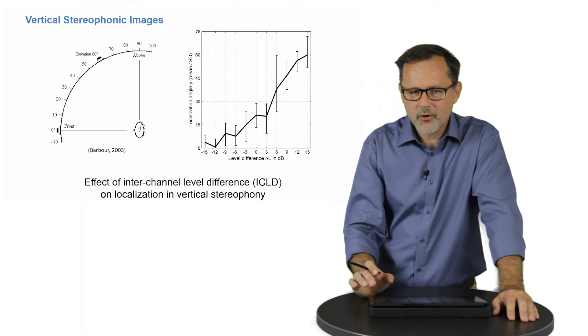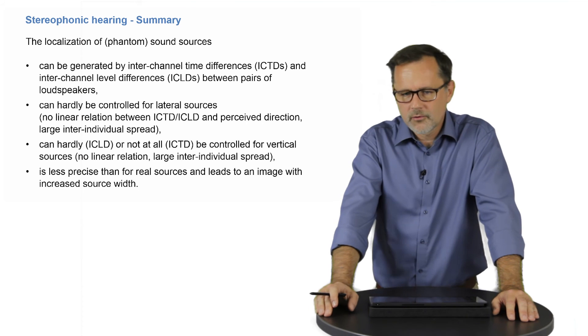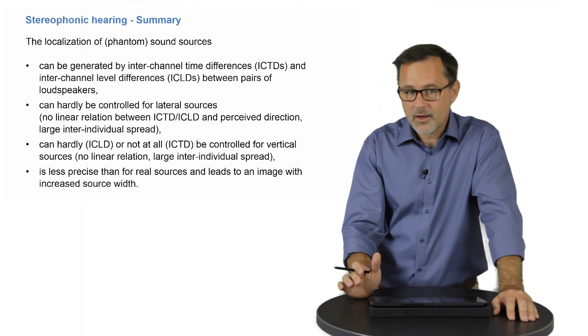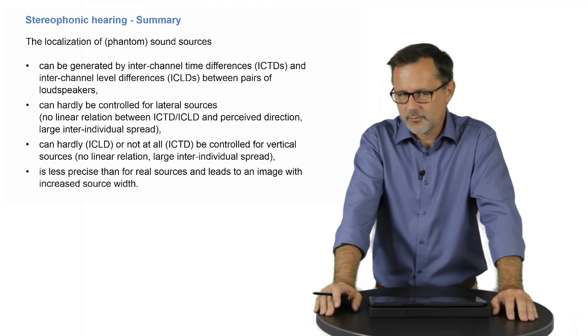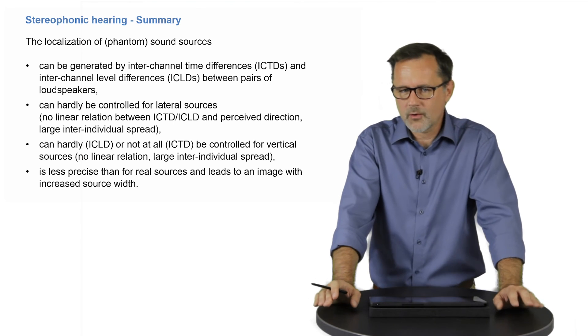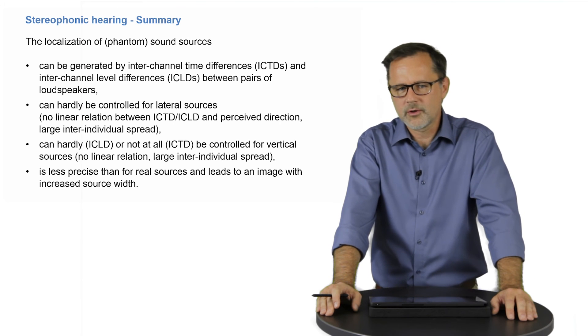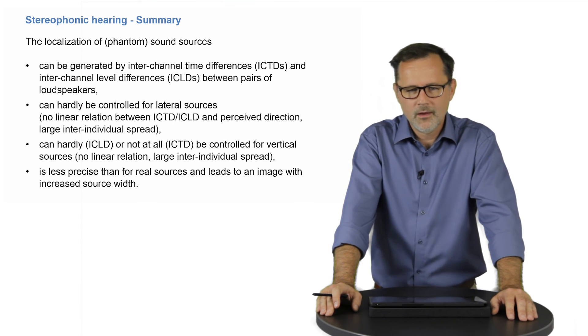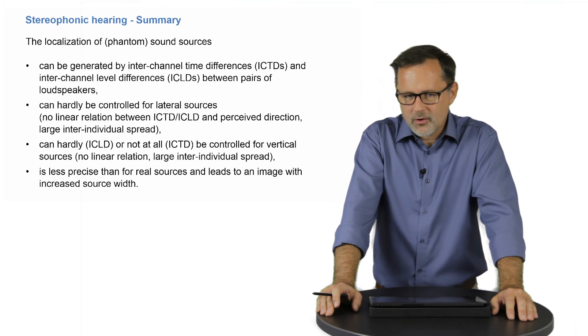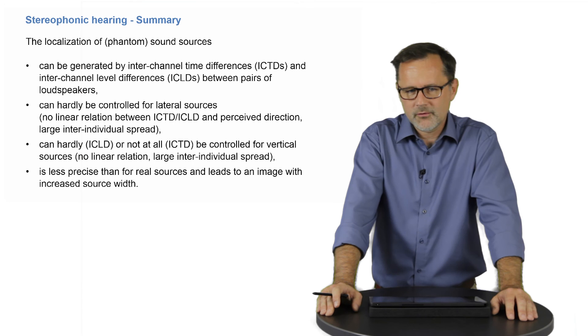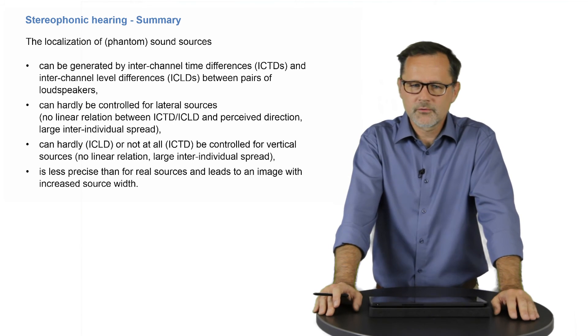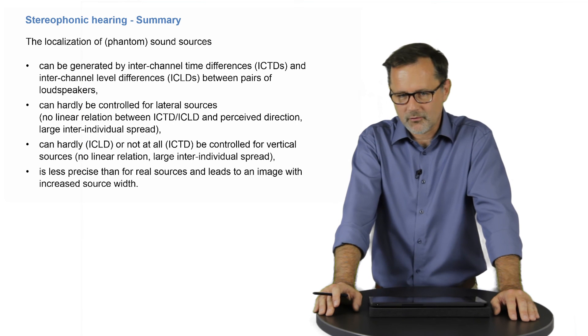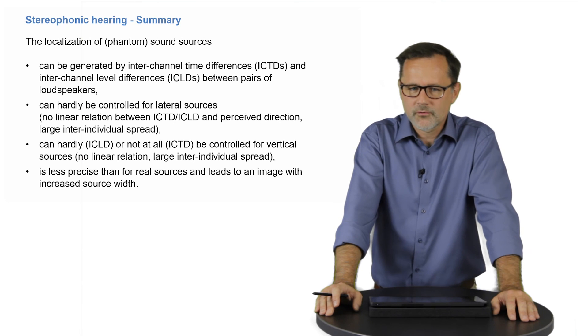And if we summarize the first part of this lecture, we have seen that the localization of phantom sources can be generated by inter-channel time and inter-channel level differences between pairs of loudspeakers, that this works well for loudspeakers in front but can hardly be controlled for lateral sources, neither can it be controlled for vertical sources, although a little better with level differences than with time differences, and that the localization of phantom sources is generally less precise than for real sources and leads to an image with increased source width.